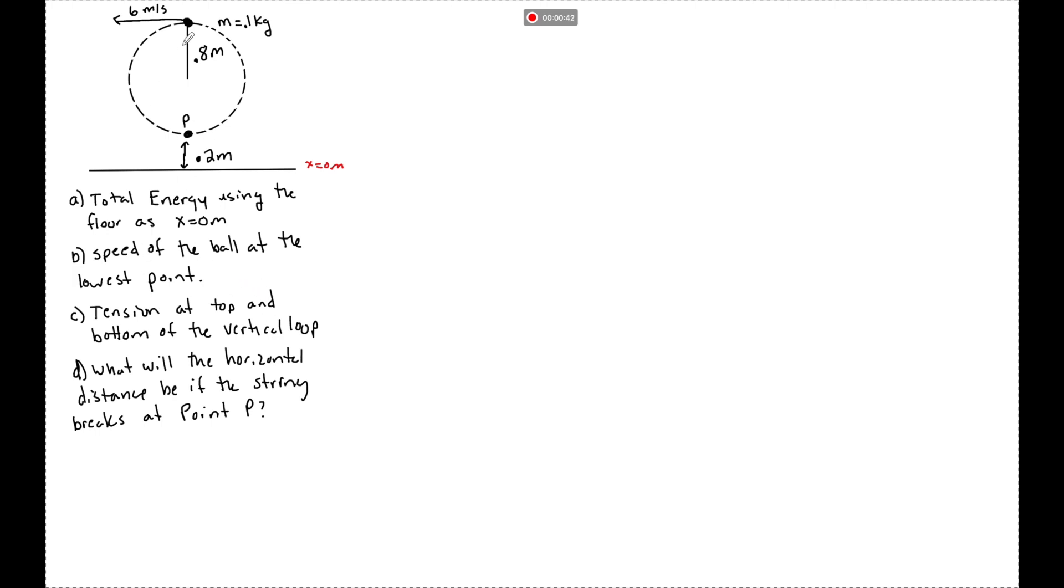the tension of the string at the top and the bottom of this vertical loop. And if the rope were to snap when it's at point P, how far will it travel this way as it becomes a horizontal projectile?